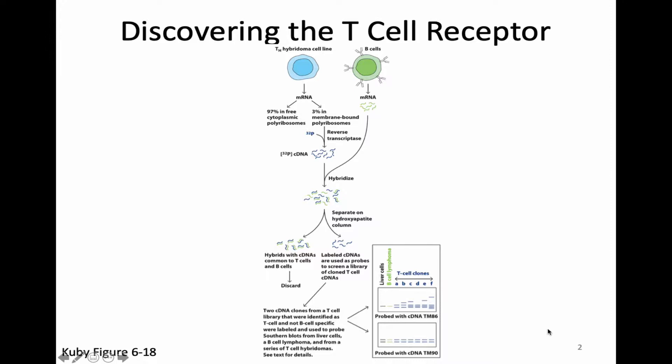Scientists did a somewhat ingenious experiment in order to actually discover the genes that encode the T cell receptor. First, they realized that the T cell receptor, as a transmembrane protein, would be translated in a membrane-bound ribosome that was part of the rough ER. So first, the researchers took mRNAs from a T cell line and separated out mRNAs being translated in the cytoplasm and mRNAs being translated at the membrane in the rough ER. Only 3% of the RNAs were being translated in the rough ER, so that narrowed down the RNAs quite a bit.